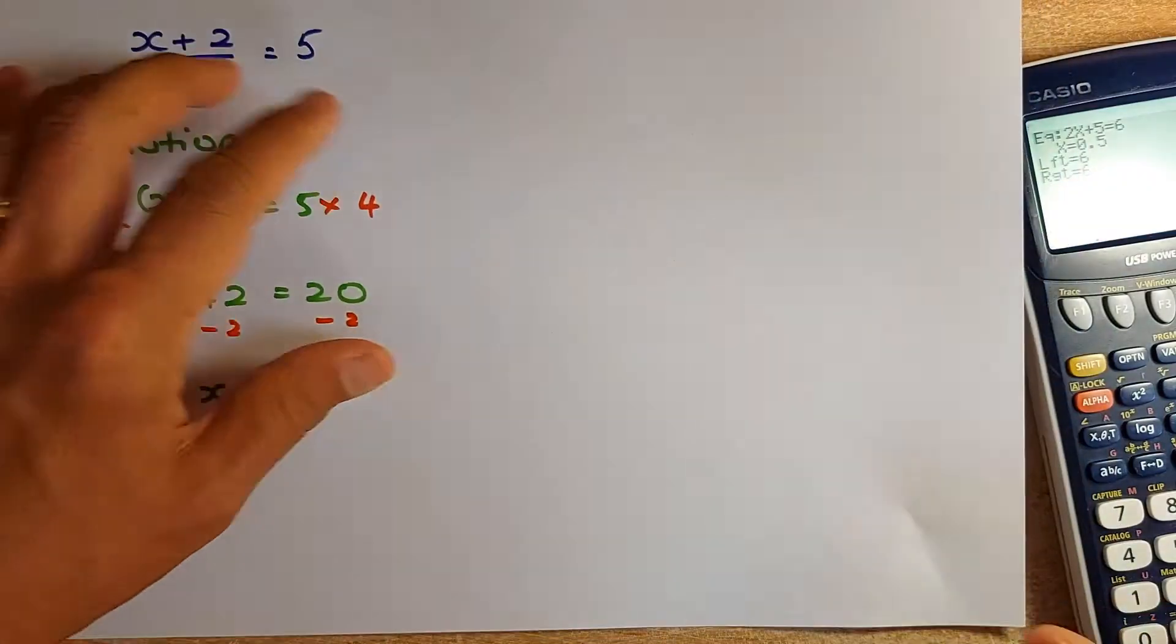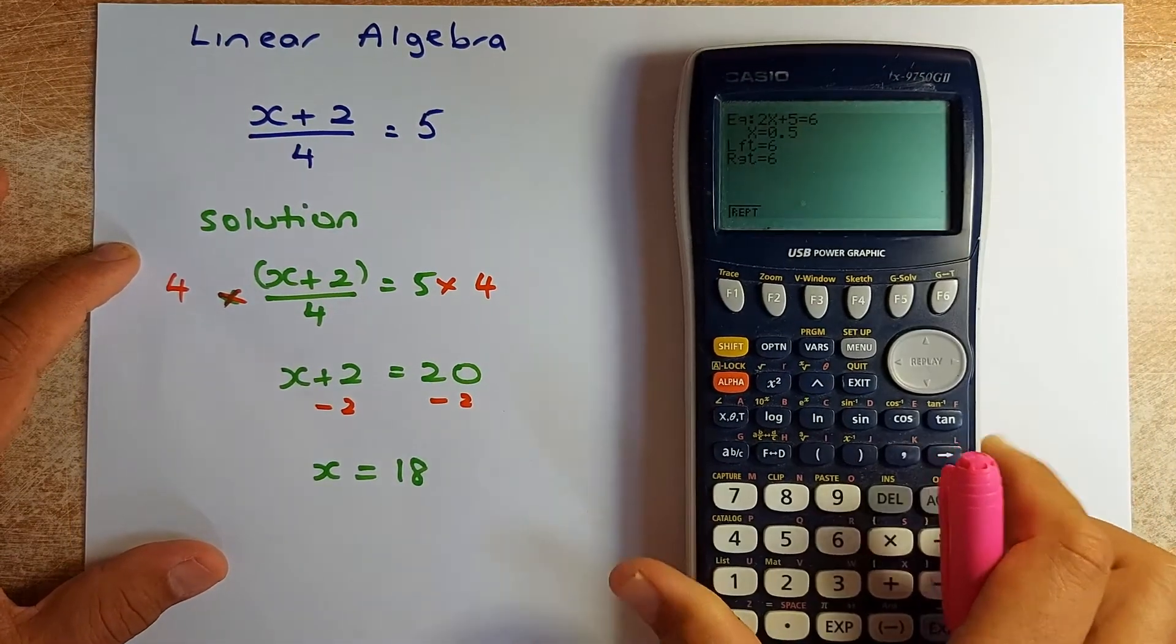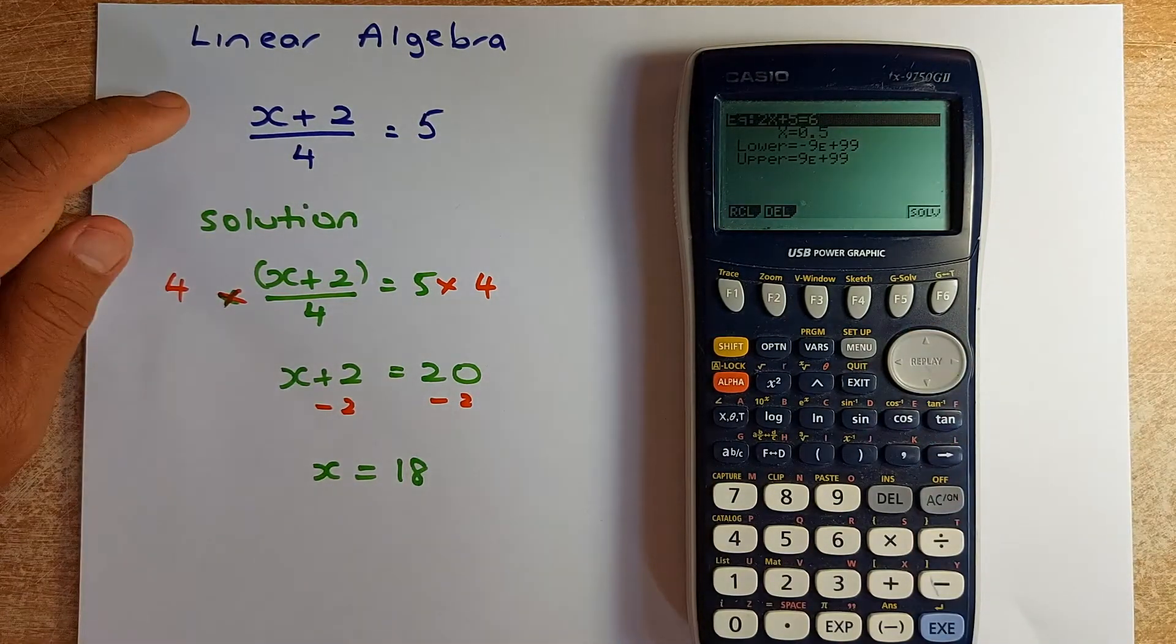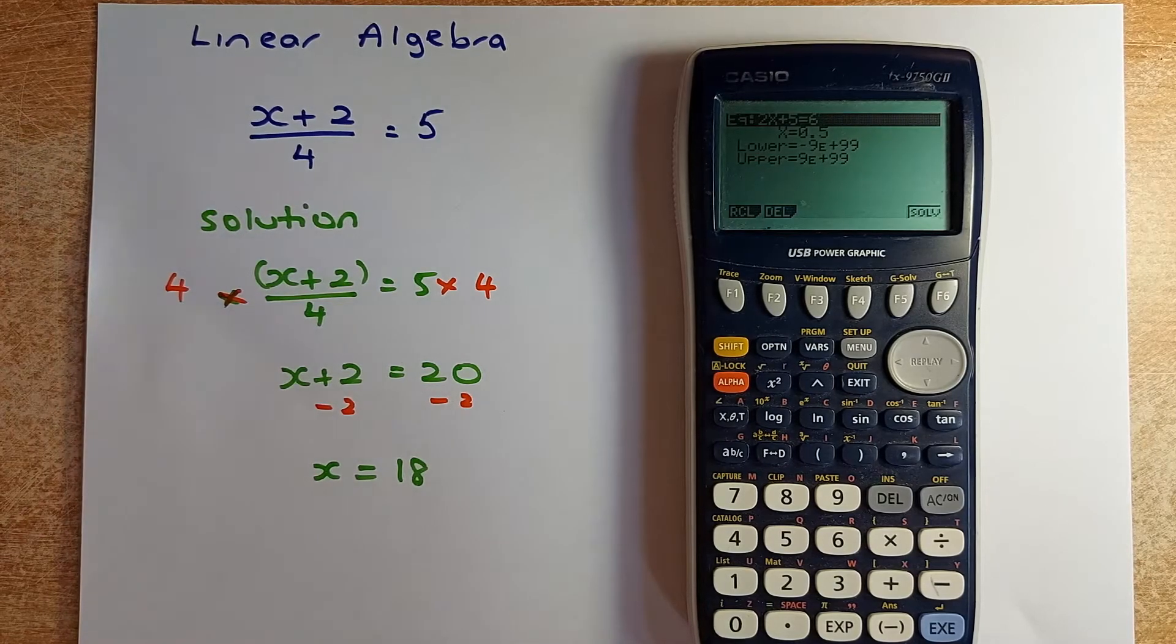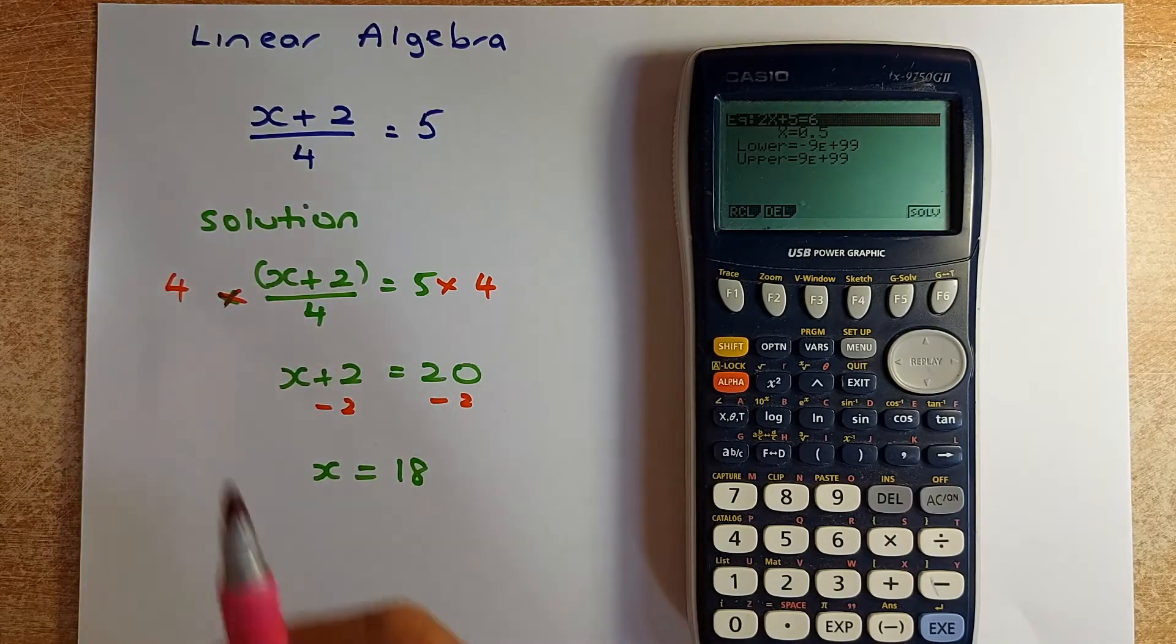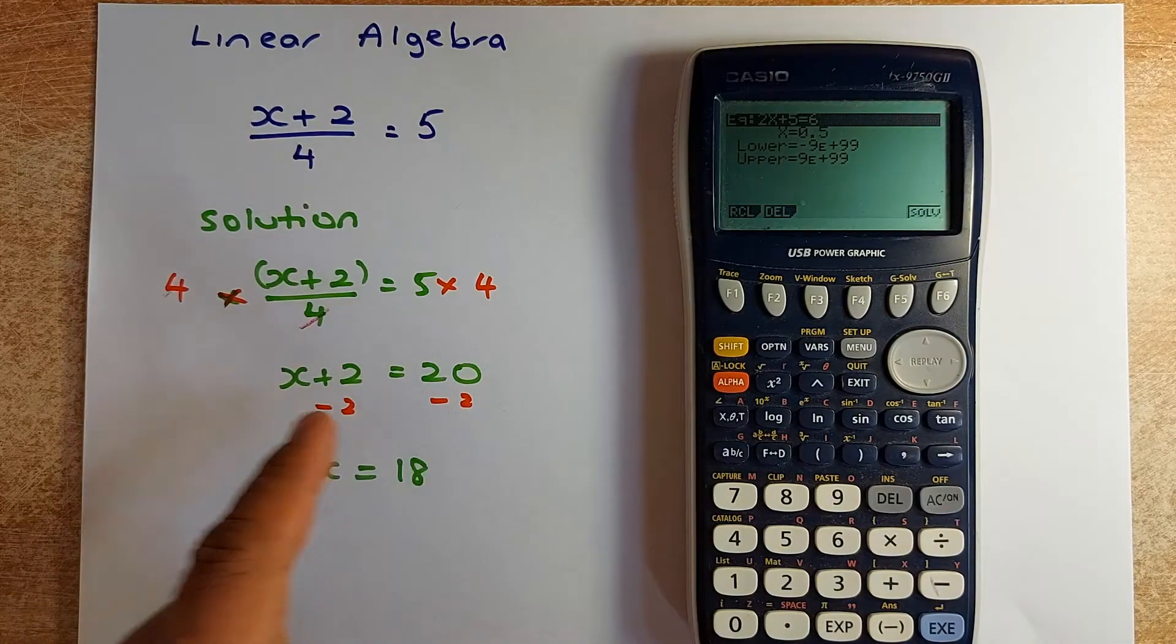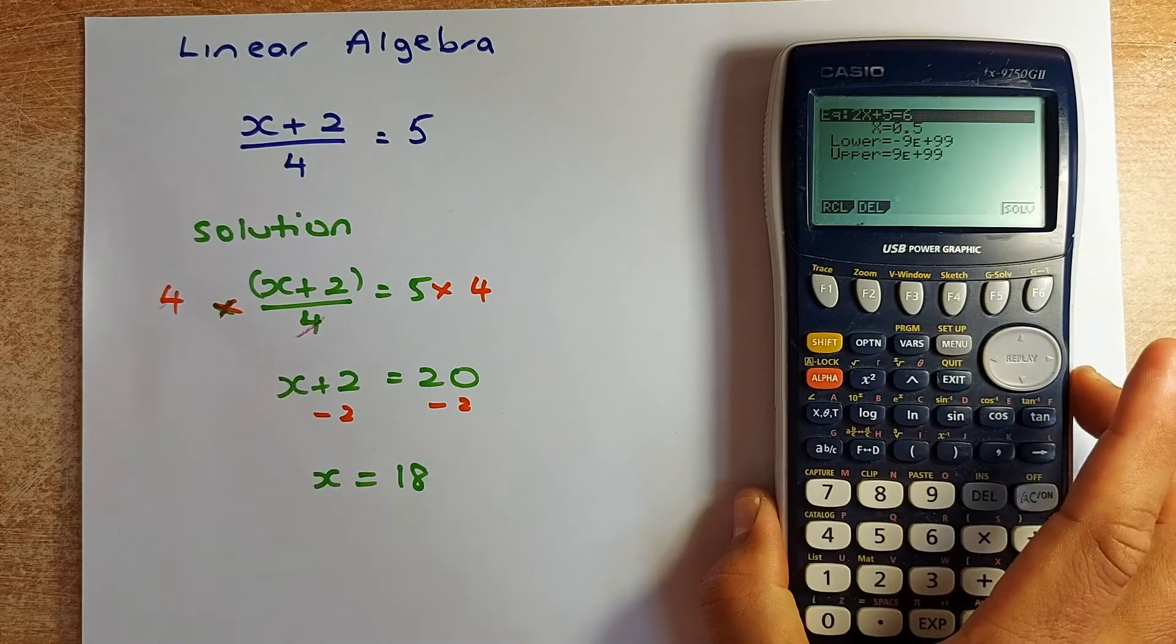The next example is also another linear algebra. This time it is on a little bit on fractional equation. We shall delete, exit it and we are going to put the new equation. So the equation is we are going to solve this manually. x plus 2 divided by 4 equal to 5. The first thing we are going to get rid of this 4. You multiply by 4 on both sides. So this 4 and this 4 will cancel out and we are left with x plus 2 equal to 20. And then we are going to minus 2 on both sides. So the final answer is x equal to 18. So how are we going to put them in a calculator?